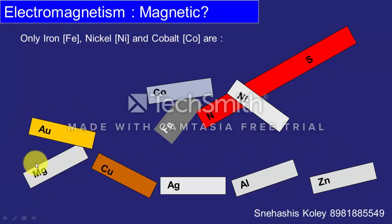In general, there are only three magnetic materials: iron, cobalt and nickel.